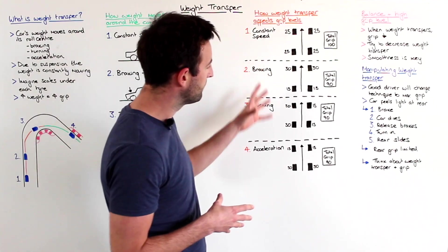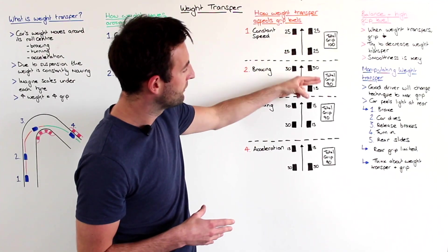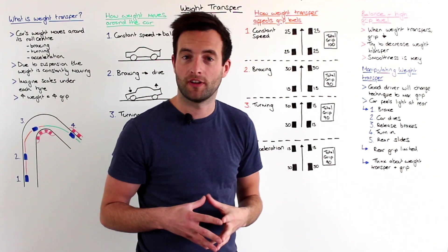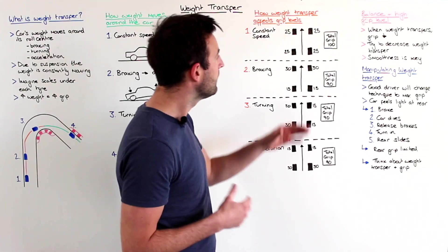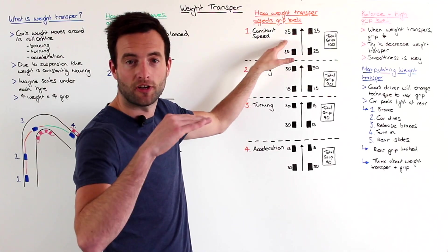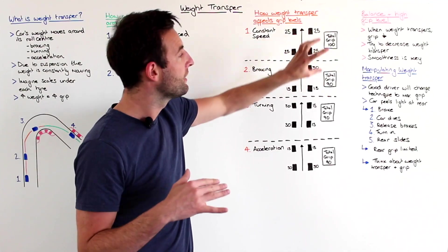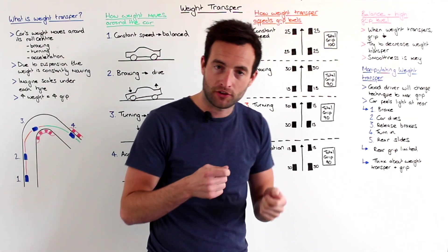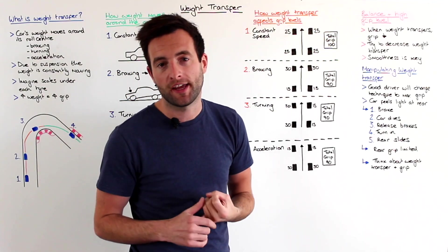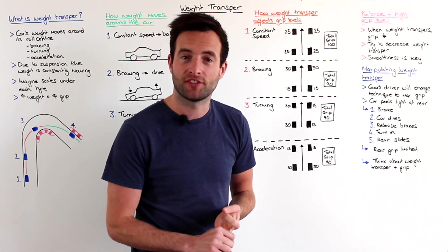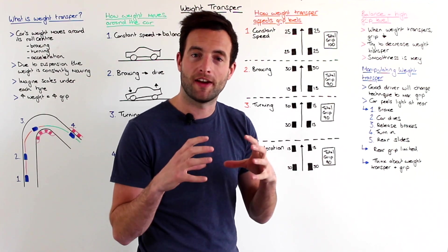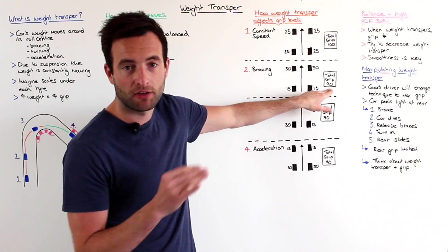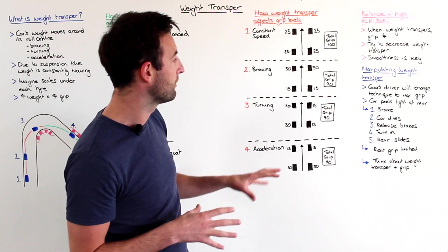So as you may have noticed from these diagrams, we also have the total grip level according to what the weight transfer is like. So when the car's static or at a constant speed with no turning, the grip level is 100. However, as soon as you transfer any weight, whether it be on the brakes, turning or acceleration, the total grip available reduces somewhat. So you can see here, for argument's sake, we've put 90 as the total grip level. 30, 30, 15 plus 15 equals 90.